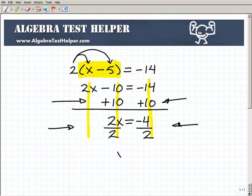All right, so this leaves me with x equals—what's negative 4 divided by 2? Hopefully you said negative 2. So if you didn't get that right, if you don't know what that is, then obviously you want to go back and work on your positive and negative numbers.